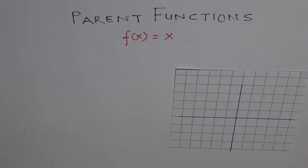Let's try to study the basic parent functions. In this series for parent functions we will study about straight line f(x) equals to x, parabola f(x) equals to x square and absolute function f(x) equals to absolute of x, square root function f(x) equals to square root of x.